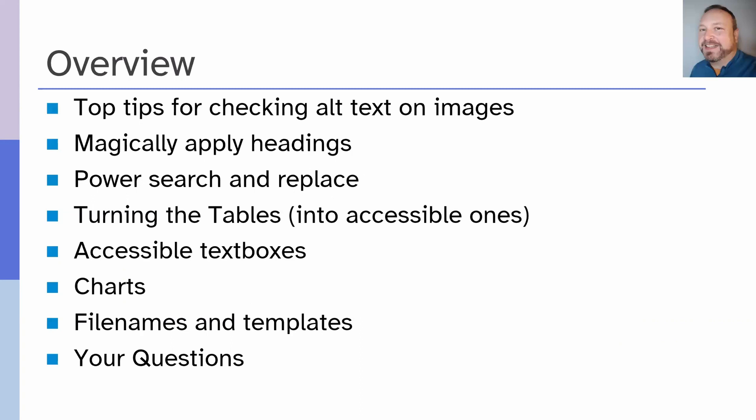Let's get going with an overview of what we're going to cover in today's webinar. We'll look at top tips for checking alt text on images, magically applying the missing headings, and using Power Search and Replace to improve your Word document. Then we'll take a deeper dive into tables — there were so many questions on tables in our last webinar — and also accessible text boxes. Before finishing up, we're talking about charts, file names, and templates, and then we'd love to hear your questions.